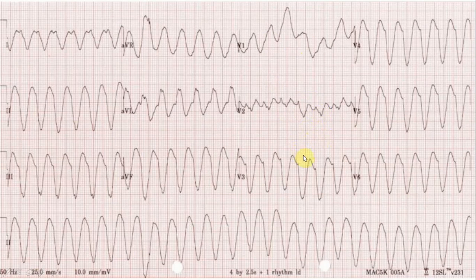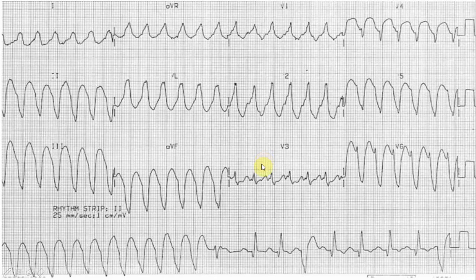Looking at the conventional criteria for the same patient: in lead I the axis is negative and in AVF it is also negative — that is a northwest axis, very characteristic of VT. In lead III there is a notch on the down-sloping part of the QRS complex — the Josephson sign — and similarly in lead II and AVF. These are all characteristic features of VT.